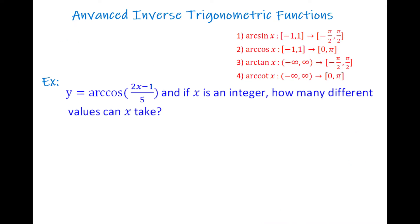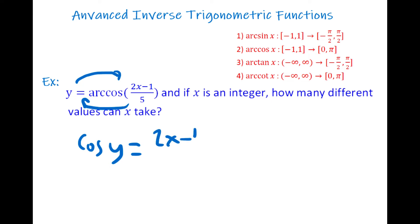Next question: y = arccos((2x−1)/5). If x is an integer, how many different values can x take? We apply the same strategy and switch those values: cosine y = (2x−1)/5.